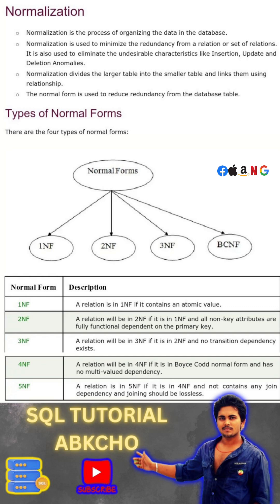Then we have Boyce-Codd Normal Form (BCNF), a stricter version of 3NF addressing certain anomalies not covered by 3NF. After that we have Fourth Normal Form (4NF), which ensures that multi-valued dependencies are eliminated.